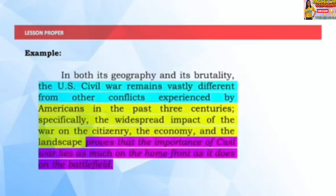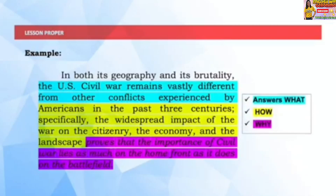Study this example: 'In both its geography and its brutality, the U.S. Civil War remains vastly different from other conflicts experienced by Americans in the past three centuries. Specifically, the widespread impact of the war on the citizenry, the economy, and the landscape proves that the importance of the Civil War lies as much on the home front as it does on the battlefield.' The blue highlighted part includes the claim about the topic. The yellow highlighted parts are the events, ideas, sources, etc. that prove the claim. The purple highlighted part answers the 'so what' question.